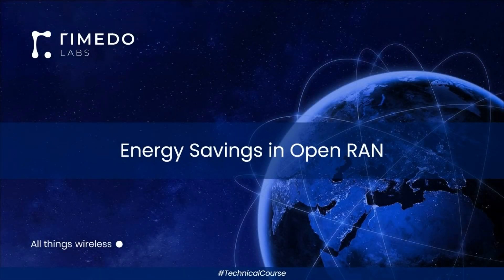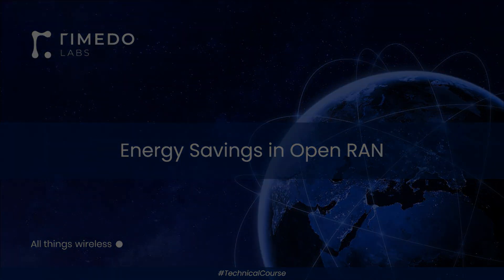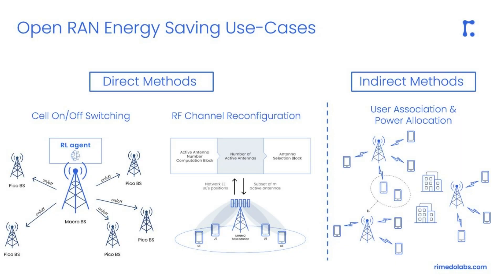I'm Marcin Hoffman from Remedal Labs and I'd like to say a few words about energy saving methods in OpenRUN. Energy saving methods can be divided into direct and indirect. Direct methods focus on switching of hardware to save energy during low load hours. There are two main use cases within the direct methods.